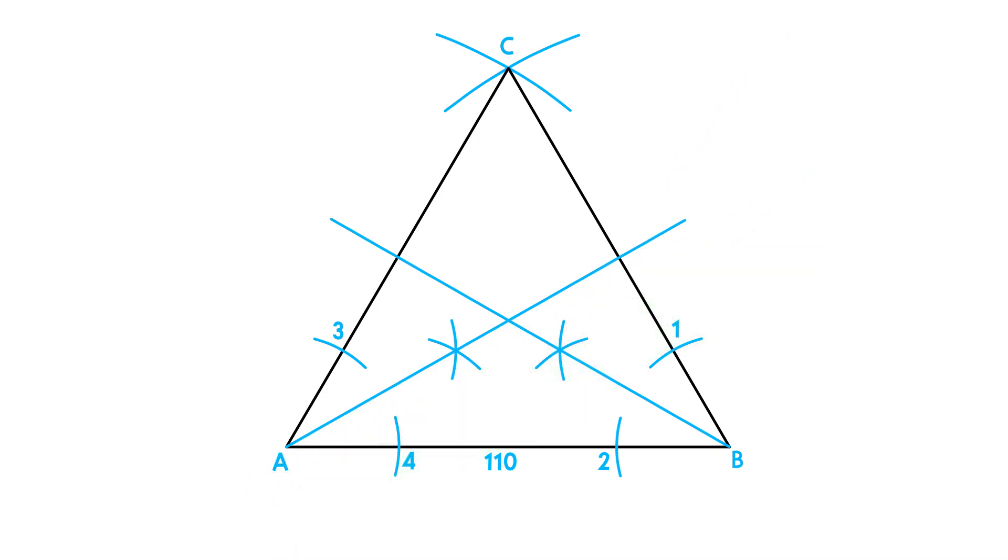Mark the point where the two bisectors cross. This is the center of the inscribed circle. Now place your compass on this point, adjust it to where the bisector touches the side and draw the circle.